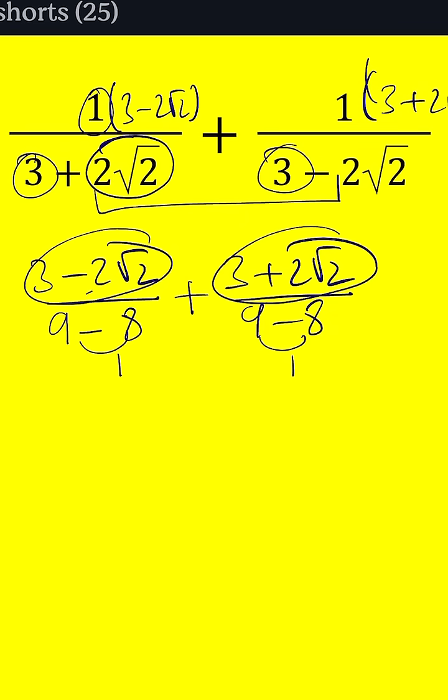When you add them, the radicals cancel out, leaving us with 6, which is actually the answer to this problem. And that's it.